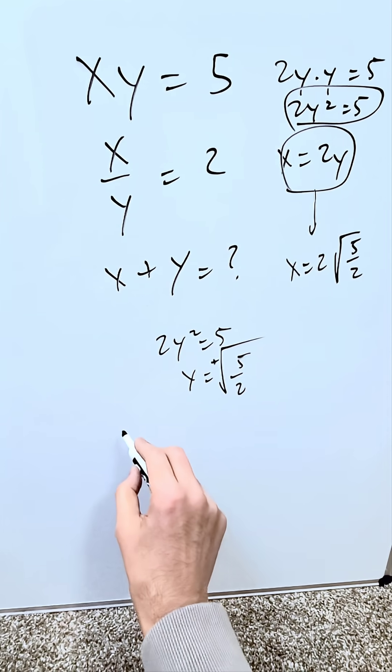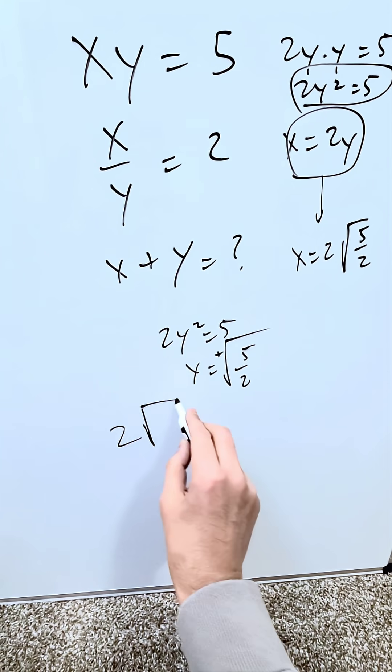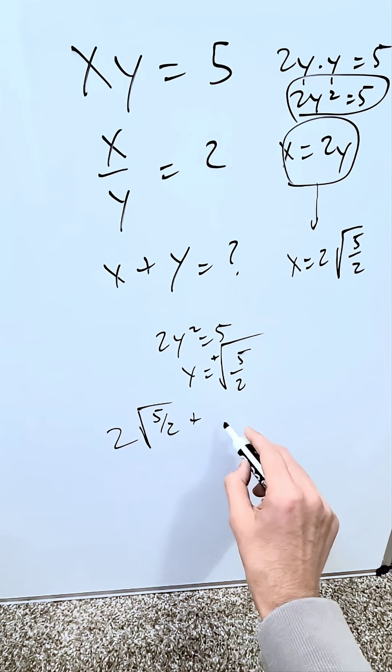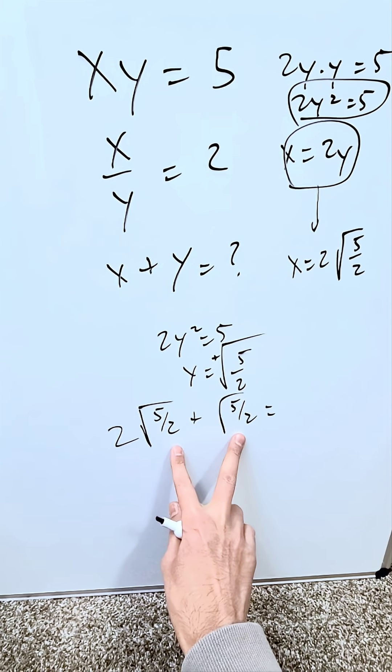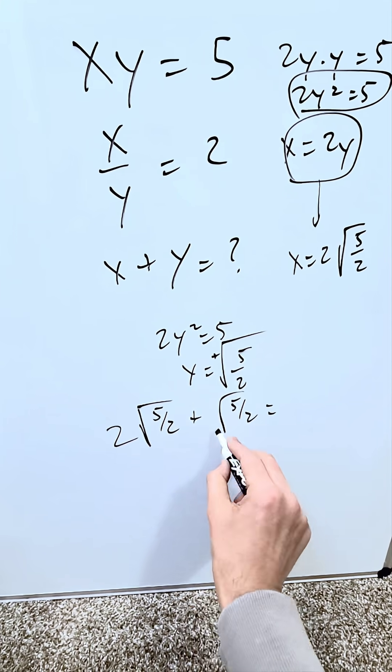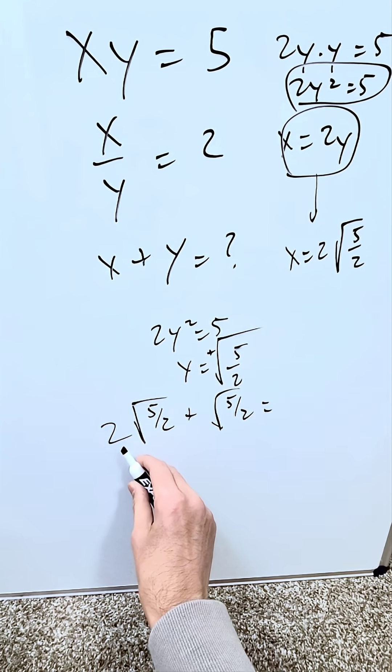Now come over here. x we now know to be 2 square root of 5 over 2. We know y to be square root of 5 over 2, and we're going to add these up. Look, they have common indices here and common radicands. Therefore, you can add them.